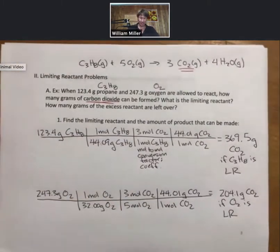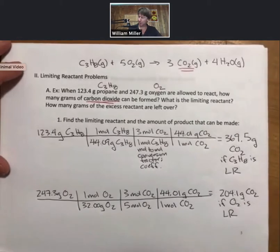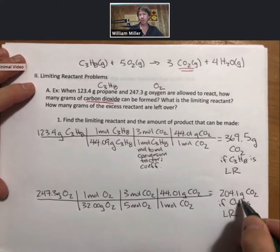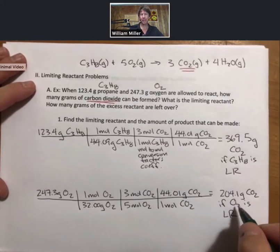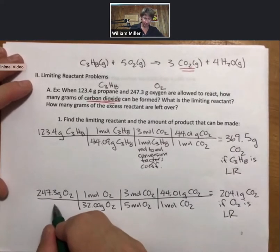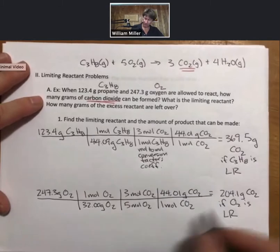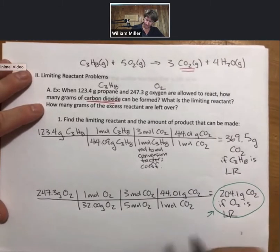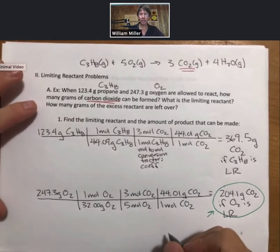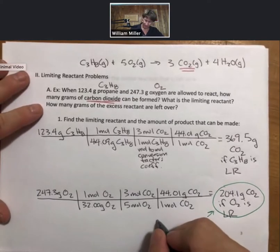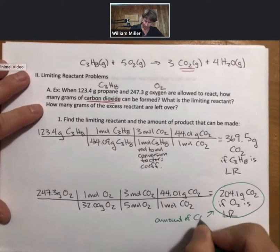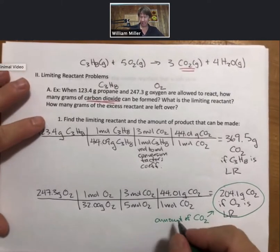What this says is since this number is smaller, it means that the smaller amount of carbon dioxide is the amount we can make and that we are going to run out of oxygen first. So the fact that this is the smaller number means that this is the amount of carbon dioxide we can make.